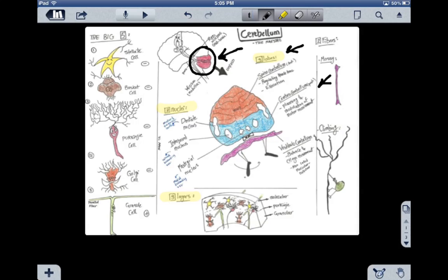The third lobe is the vestibulocerebellar lobe, and also called the flocculonodular lobe in the purple color. Its major function is balance and control of eye movement.